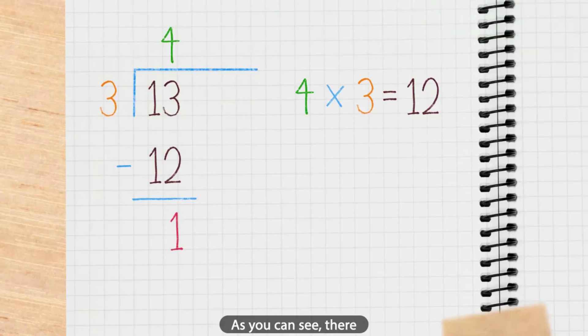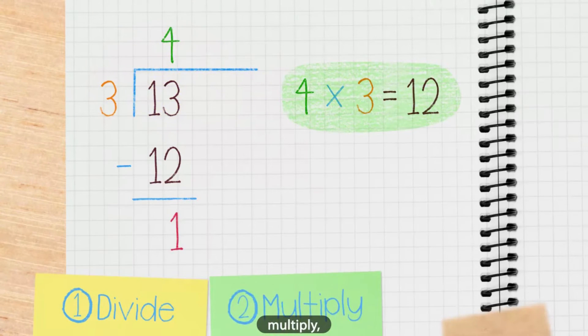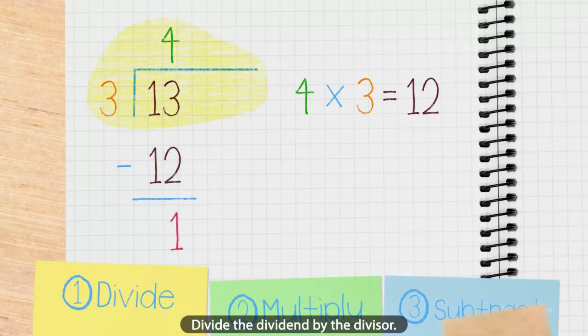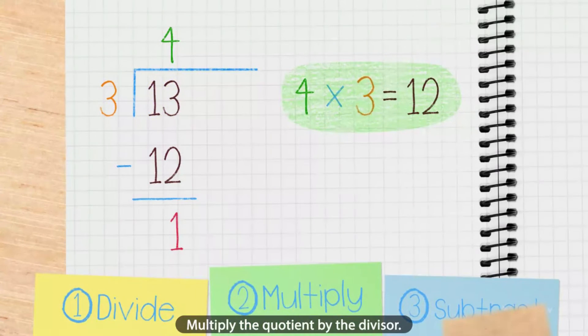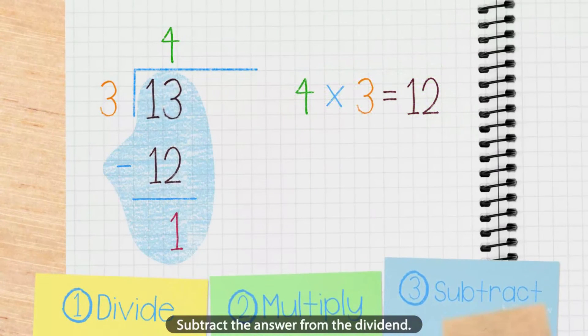As you can see, there are three key steps to finding the remainder. Divide: divide the dividend by the divisor. Multiply: multiply the quotient by the divisor. Subtract: subtract the answer from the dividend. And there you go. You have found your answer.